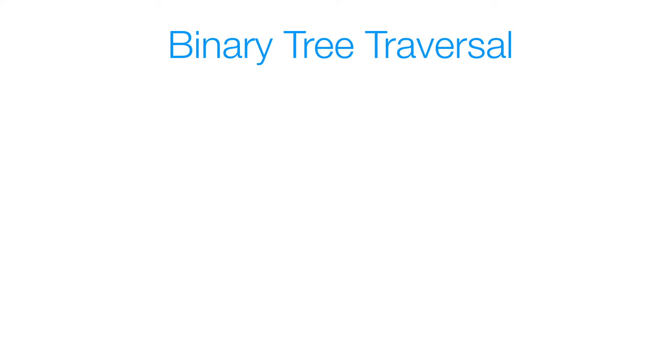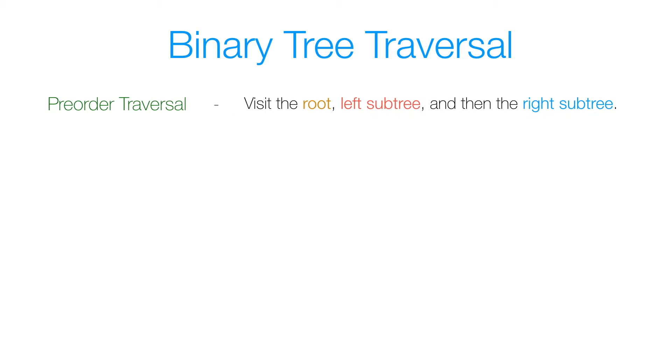The first technique we're going to look at is called pre-order traversal. In this technique, we visit the root, then we visit its left subtree, and then its right subtree.